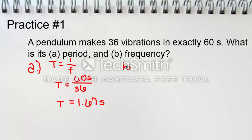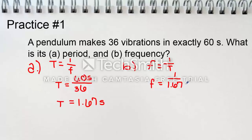Now we have the frequency. To find the frequency, the T and the f are just switched. Frequency equals 1 over the period. So frequency equals 1 over 1.67 seconds, and that gets us the frequency at 0.6 hertz.